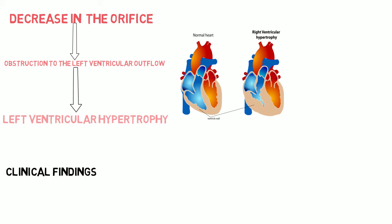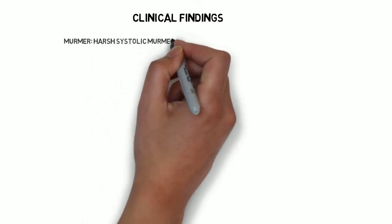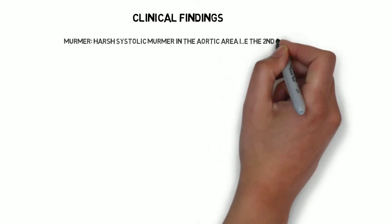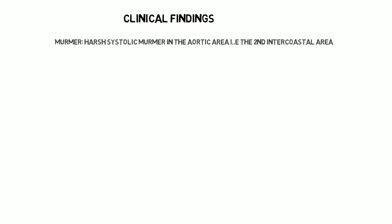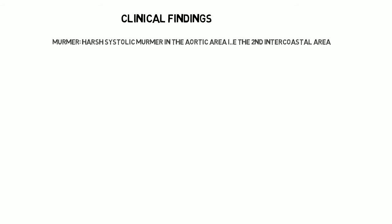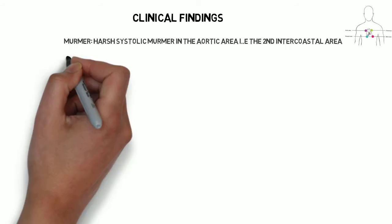The clinical findings are the most important and most tested part on board exams. First, there is a murmur — abnormal heart sounds found whenever there is a pathology of the valve. Murmurs are of two types: systolic and diastolic. Since the aortic valve opens in systole, aortic stenosis produces a systolic murmur — specifically, a harsh ejection-type murmur heard in the aortic area, located at the right second intercostal space.